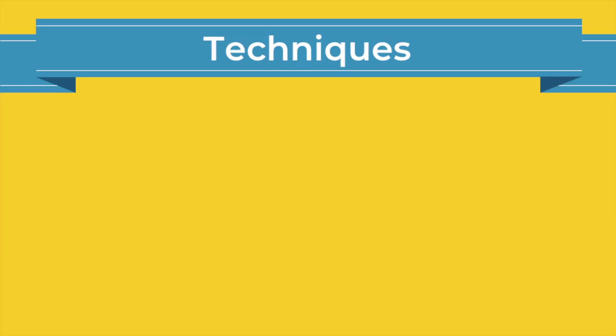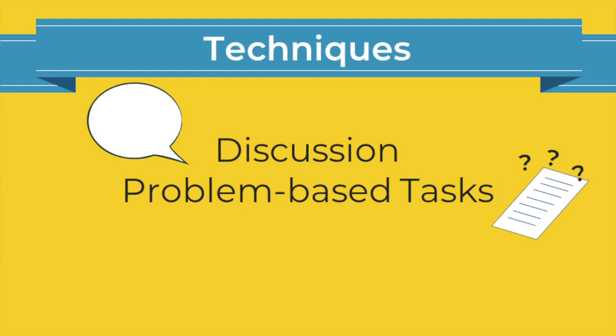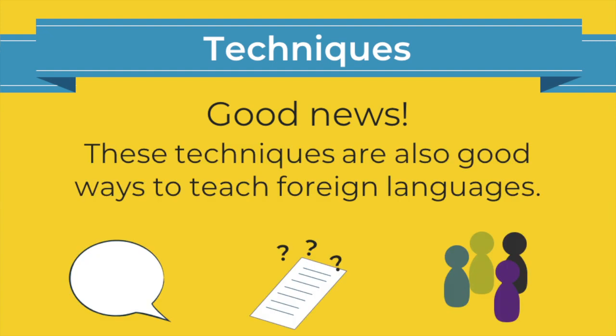Specific techniques that are used to teach critical thinking include discussion, problem-based tasks, and the use of small groups. It is interesting to note that these teaching techniques are also frequently cited as particularly good ways of teaching foreign languages.